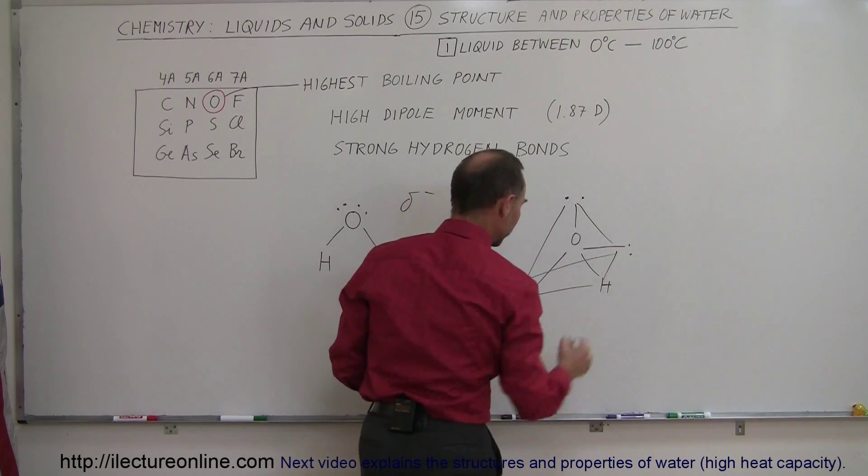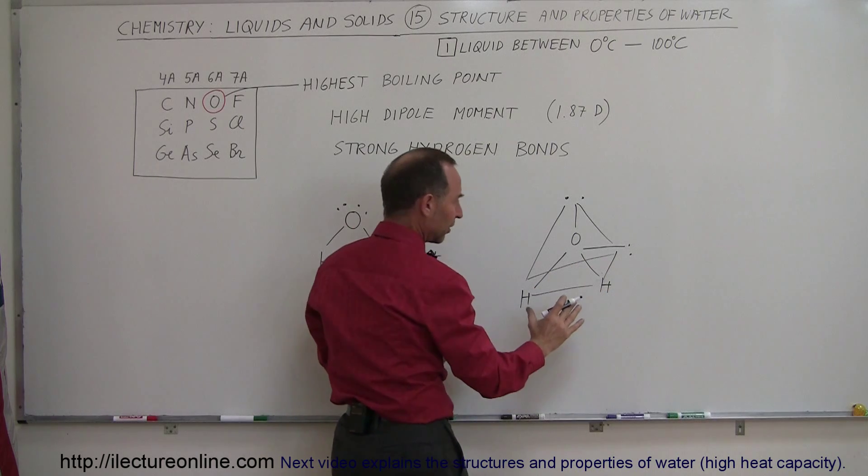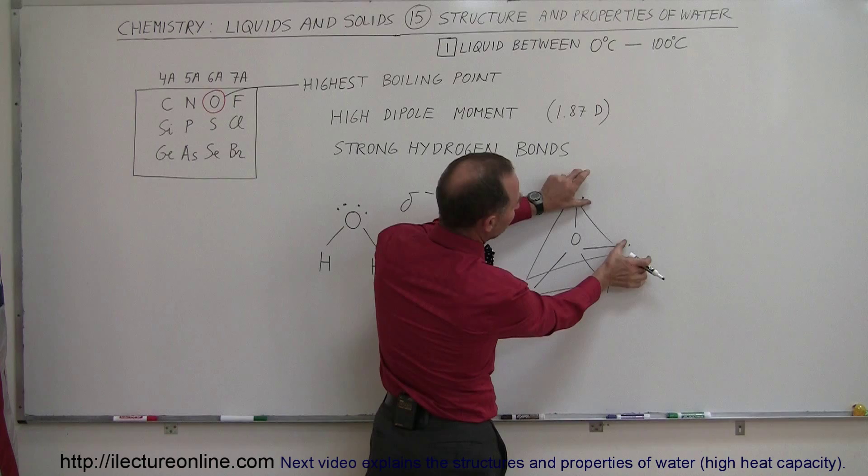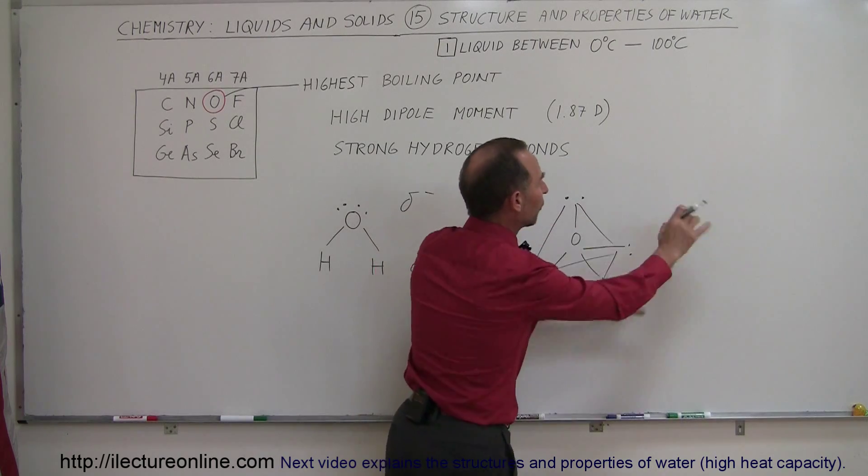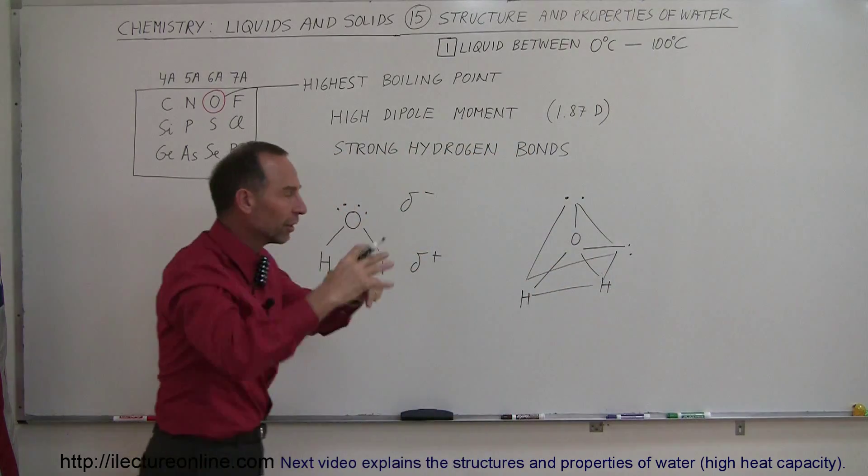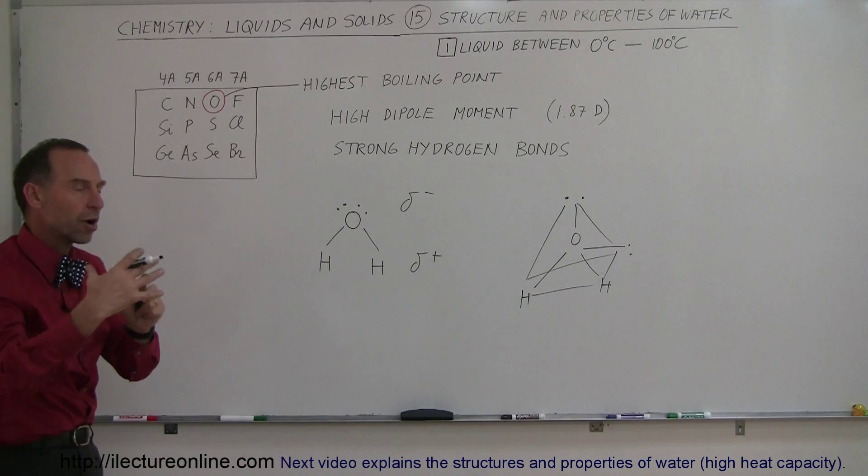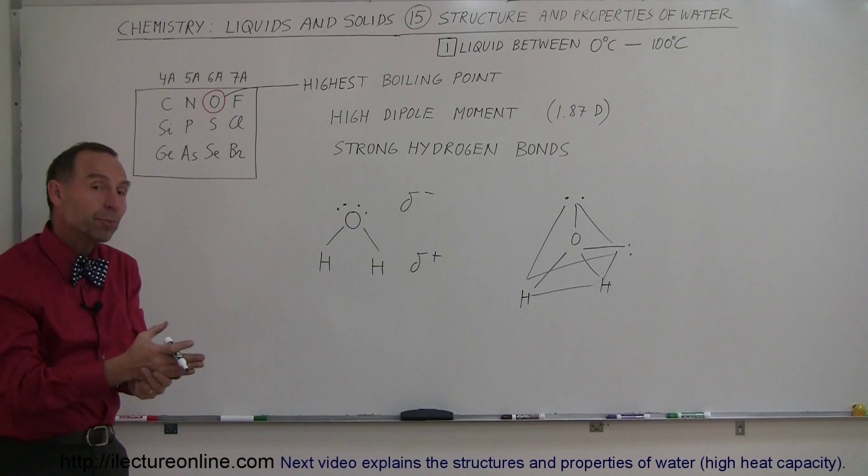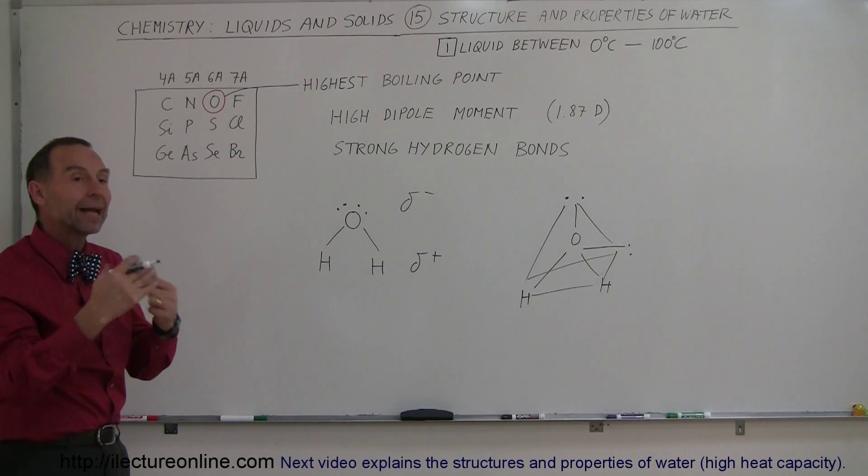You can see that it's somewhat of a tetrahedral. These two hydrogens can bond with the two free electron pairs of another molecule and so forth and so on. It can build those very large structures, so very strong intermolecular forces between the water molecules causing the melting point and the boiling point to be that high.